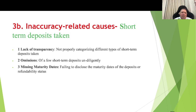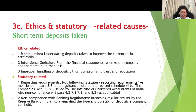Inaccuracy causes for short-term deposits taken: Number one — lack of transparency, not properly categorizing different types of short-term deposits taken. Number two — omission of a few short-term deposits, done undiligently. Number three — missing maturity rates, failing to disclose the maturity rates of the deposits or their refundability status.